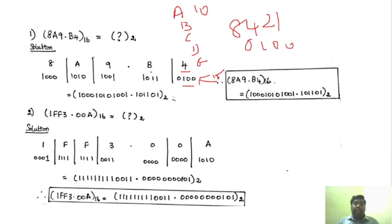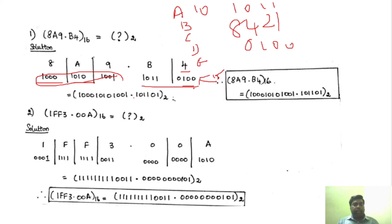For B, which is 11, you write 1011 — that is 8, 9, 10, 11. For 9 it is 1001. For A, which is 10, it is 1010. And for 8 it is 1000. Now you combine the integer part, then dot, then the fractional part. For the next example, writing each digit separately: F is 15 so it is 1111, and 3 is 0011 — that is 2 plus 1 equals 3. Then write the integer part, dot, fractional part.